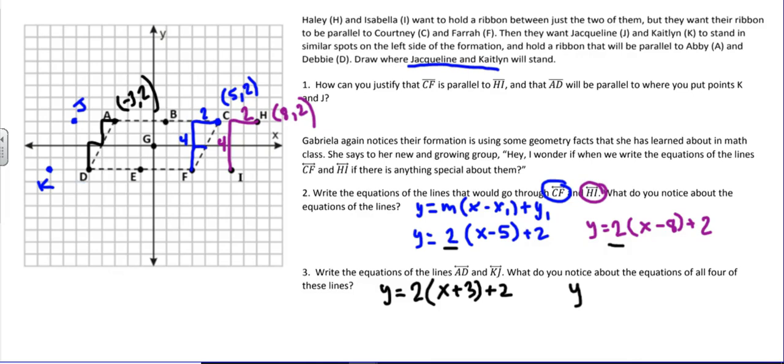And then KJ. The slope is still 2. And then I'm going to use point K here. Negative 8, negative 2. So I'll have plus 8, minus 2. So again, we have slopes that are 2. So what do you notice about the equations of all four lines? All four of these lines have a slope of 2. What's important to take away from this task is when you have parallel lines, the slopes will be the same.